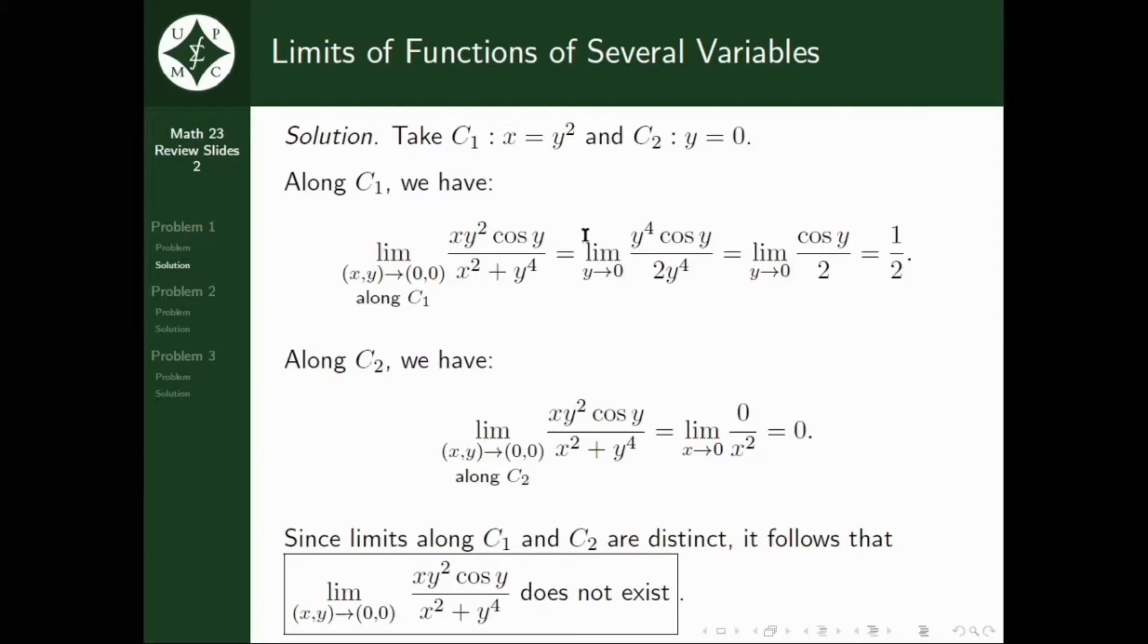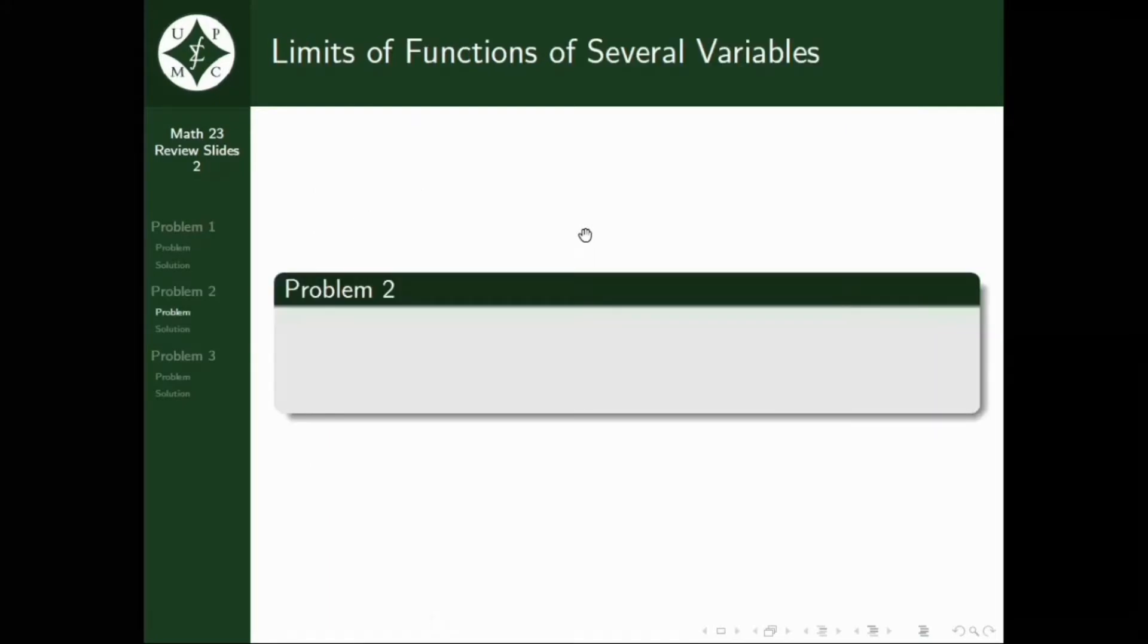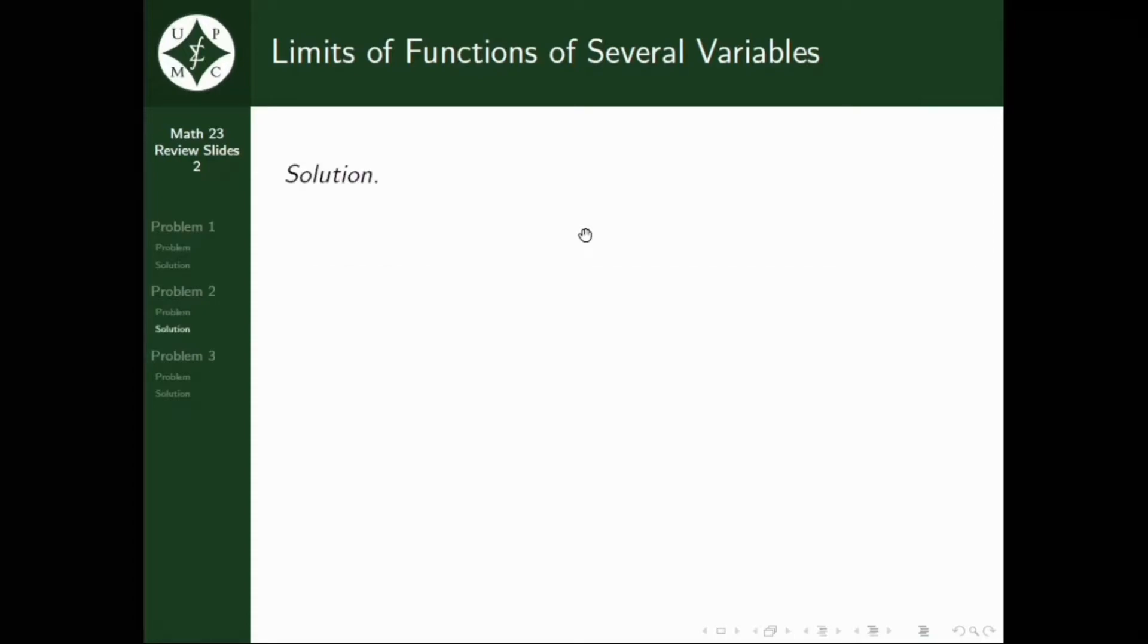Now, let's go on to the second item. For the second item, we are asked now to evaluate the limit of X squared plus Y squared all over square root of X squared plus Y squared plus 1 minus 1 as XY approaches the origin. Pag ako, kasi kapag nakakita ako ng radical expression, ang nakoconsider ko na talaga at first ay mag-rationalize. So, sige, let's consider that method.